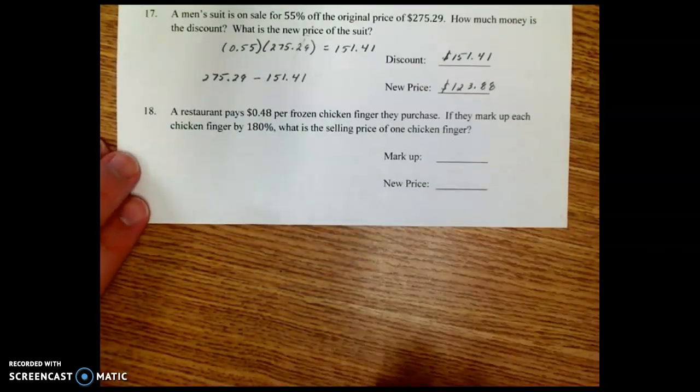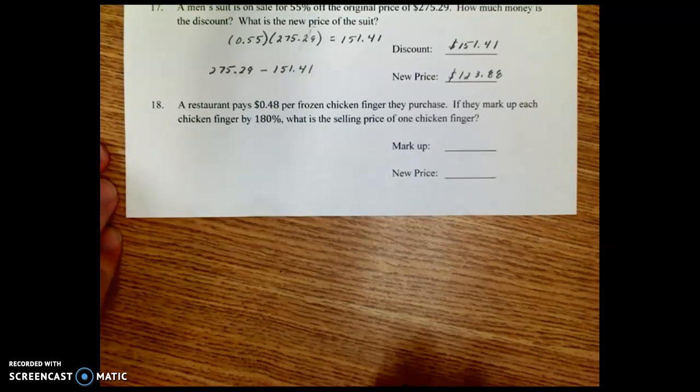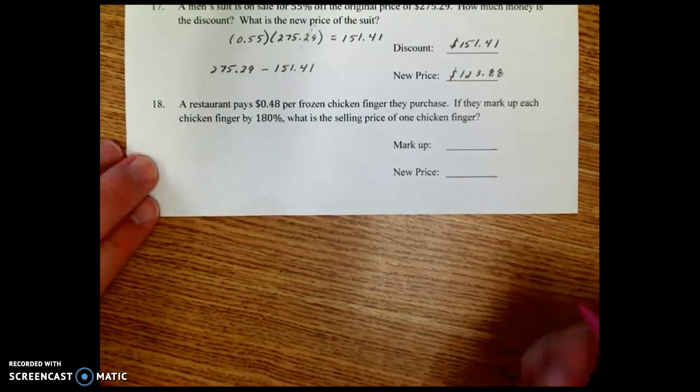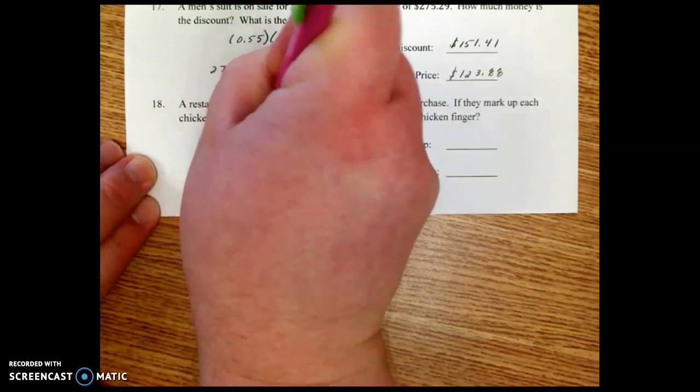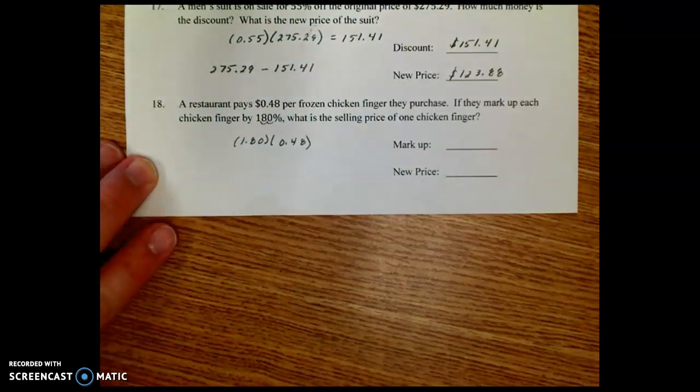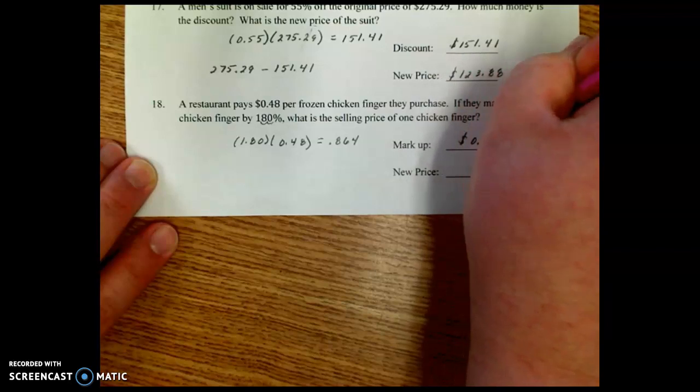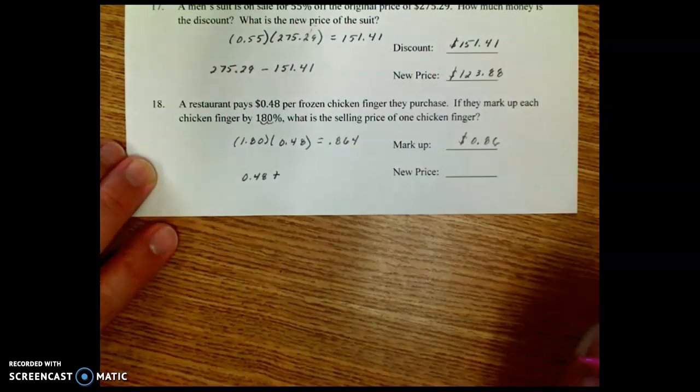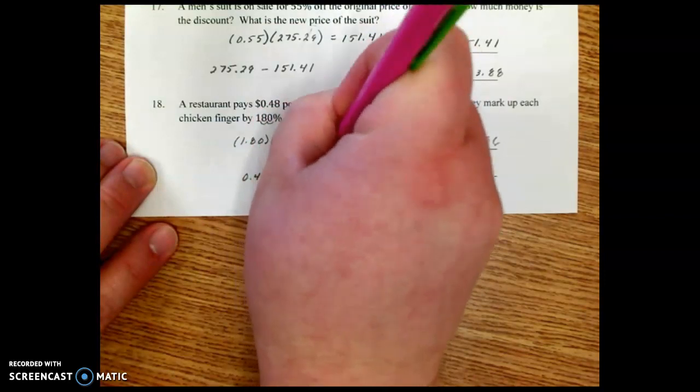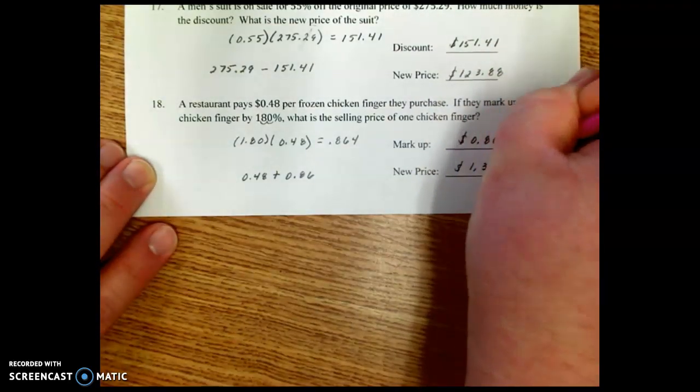Number 18, a restaurant pays $0.48 per frozen chicken finger they purchase. If they mark up each chicken finger by 180%, what is the selling price of one chicken finger? So we're going to take the percent, move it two places to the left. That's a decimal of 1.80. And we're going to multiply that by $0.48 to find out the amount of markup. So 1.80 times 0.48, that is 0.864. So the markup is going to be $0.86. The new price we're going to add because it's a markup. It was $0.48 to purchase it, plus the $0.86 of markup. So if we do $0.48 plus $0.86, the new price of a chicken finger is going to be $1.34.